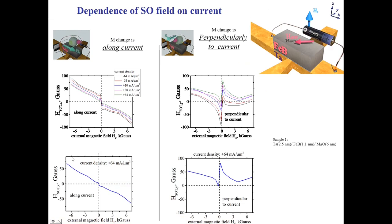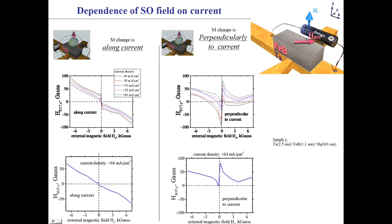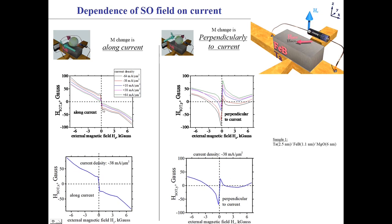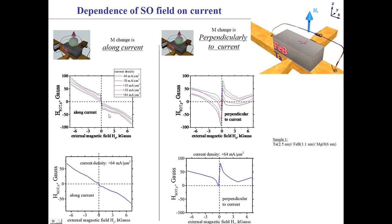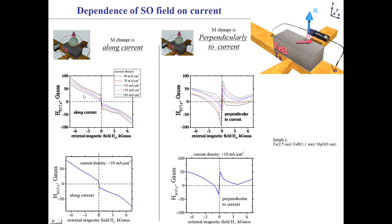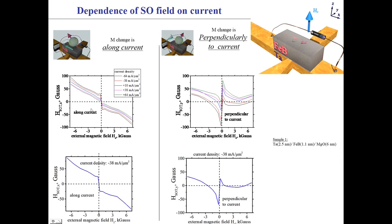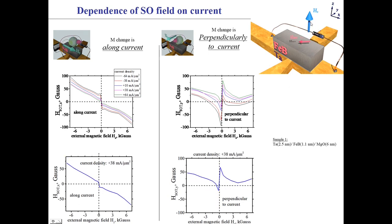This slide shows the measurement of dependence of SOT magnetic field on electrical current. This graph shows the measured components of SOT magnetic field along and perpendicular to the current. The lines of different colors correspond to different currents. The current dependence is substantial, and the current dependence is also influenced by the external perpendicular magnetic field.